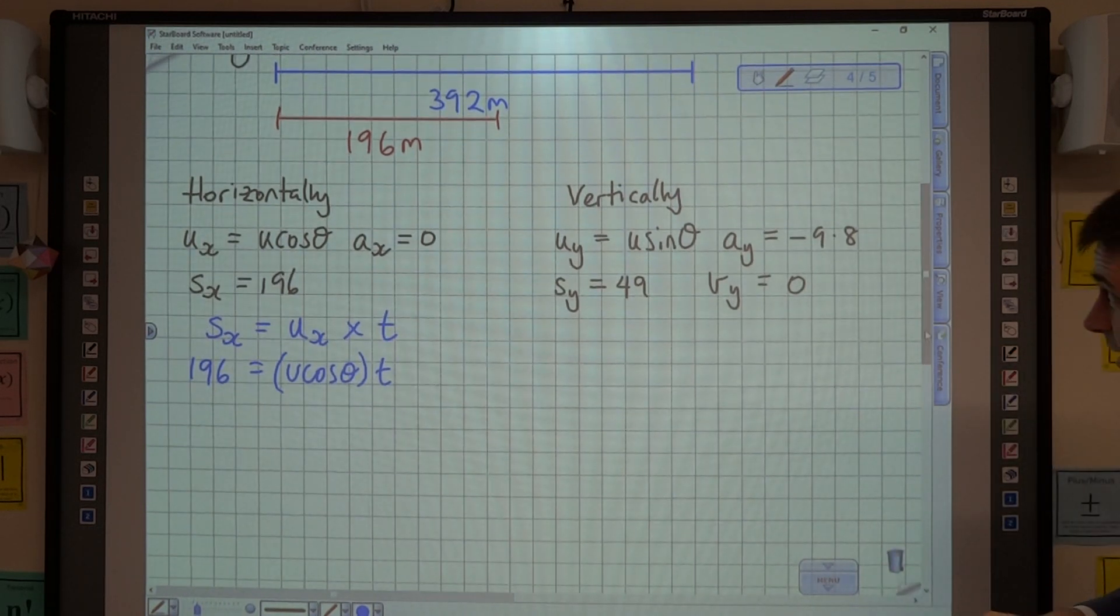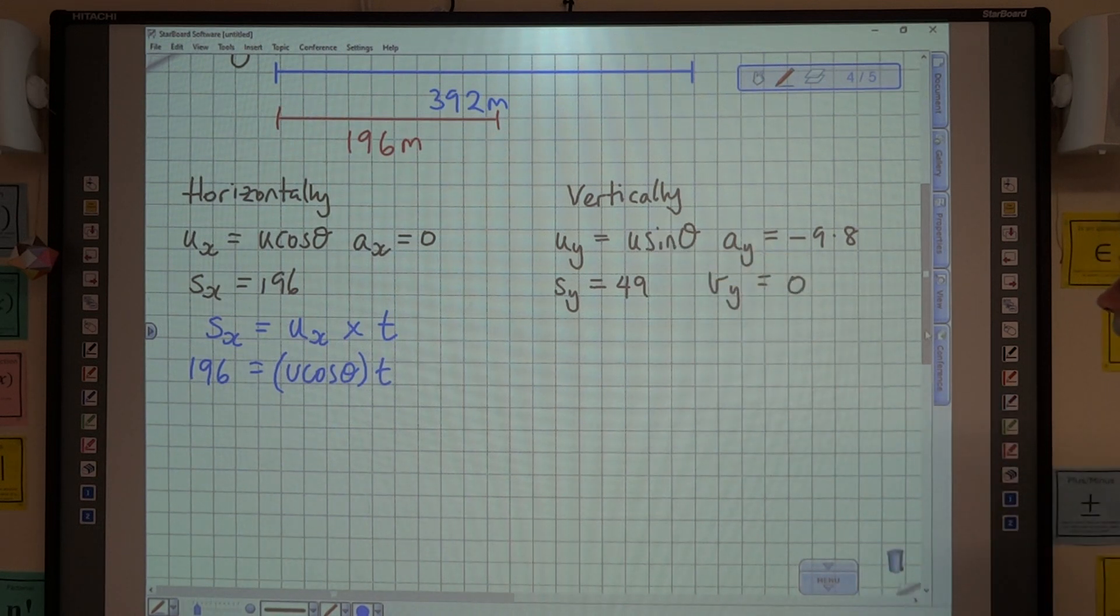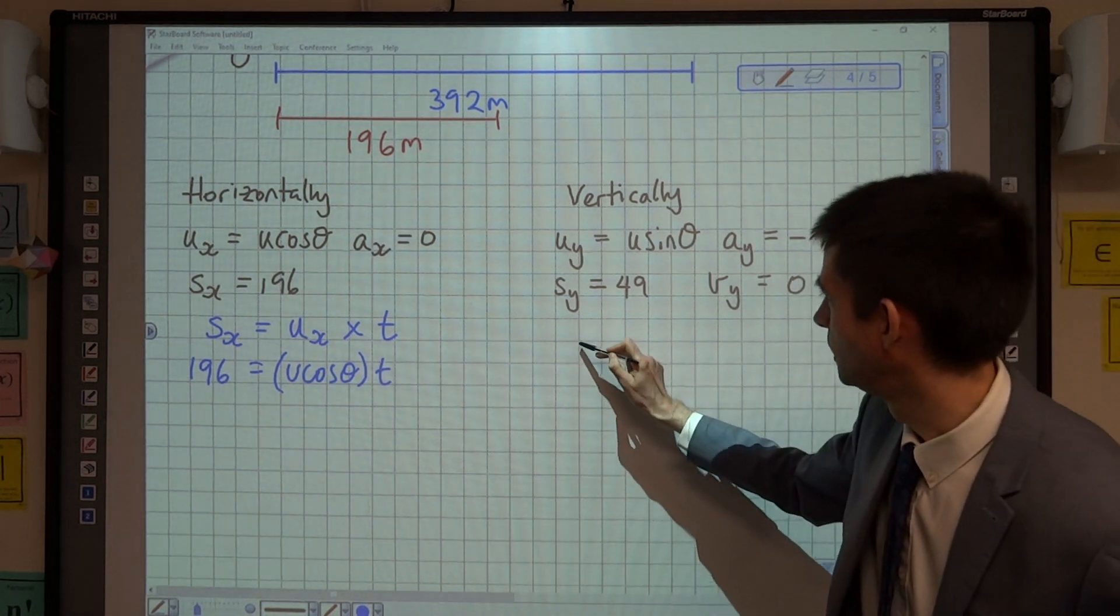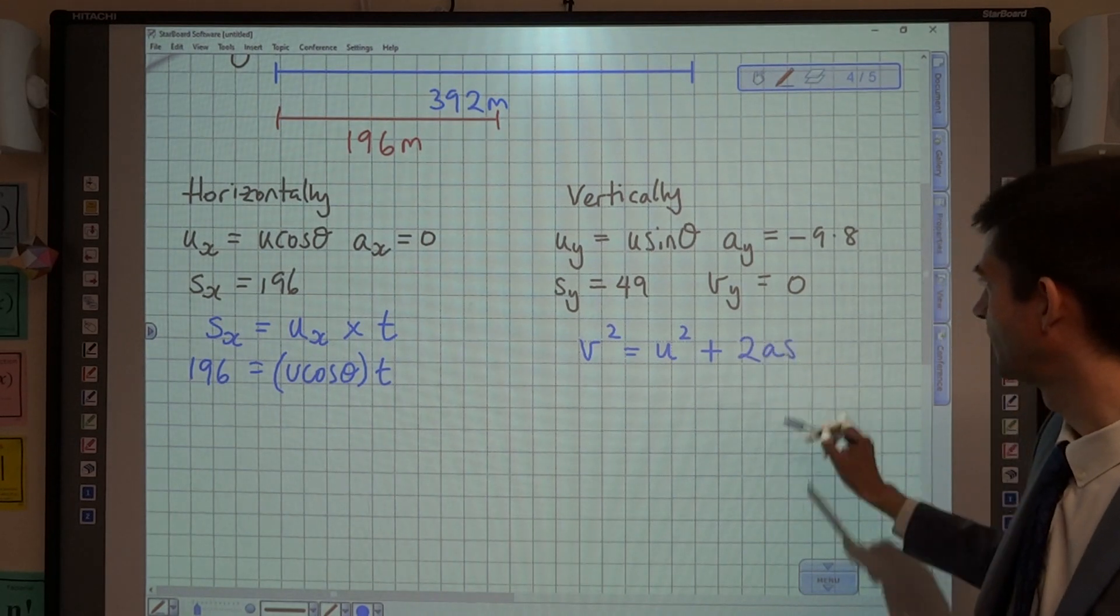So, looking at what we can do vertically then, we have u, a, s and v. So, if we start off by using v squared equals u squared plus 2as, see where that gets us.